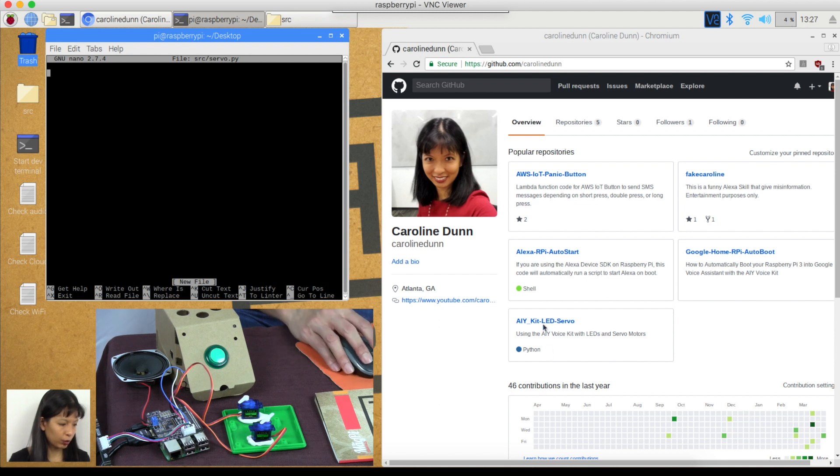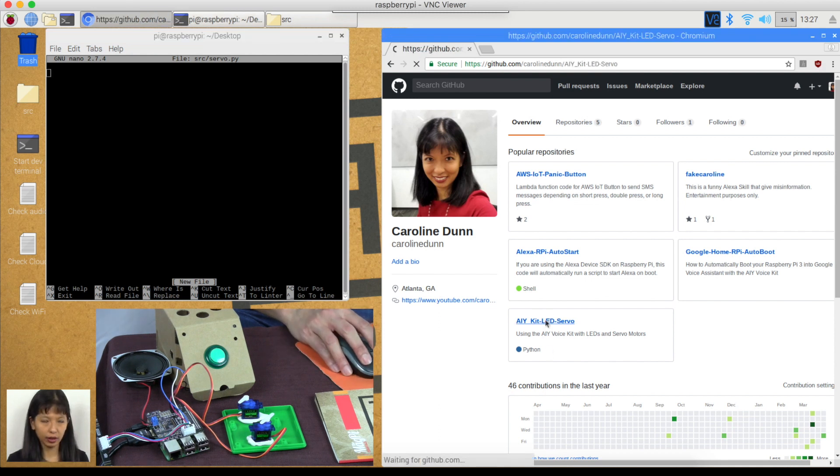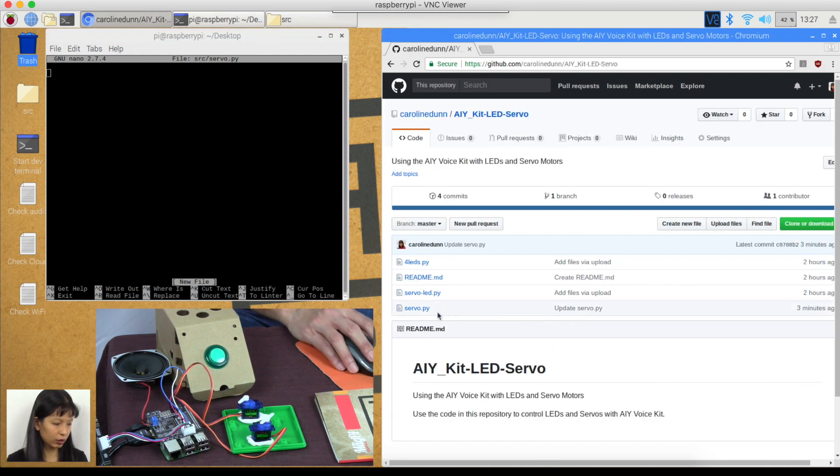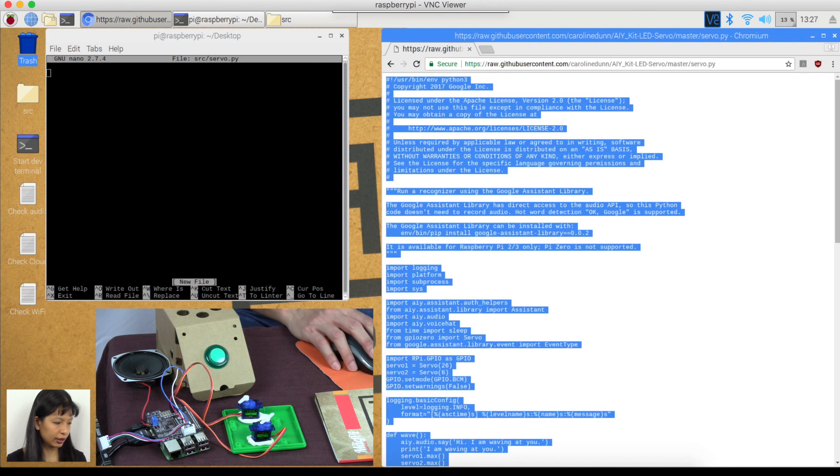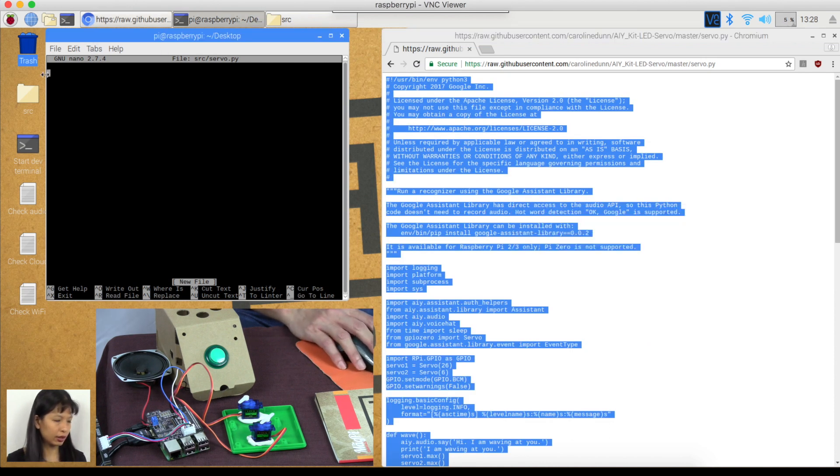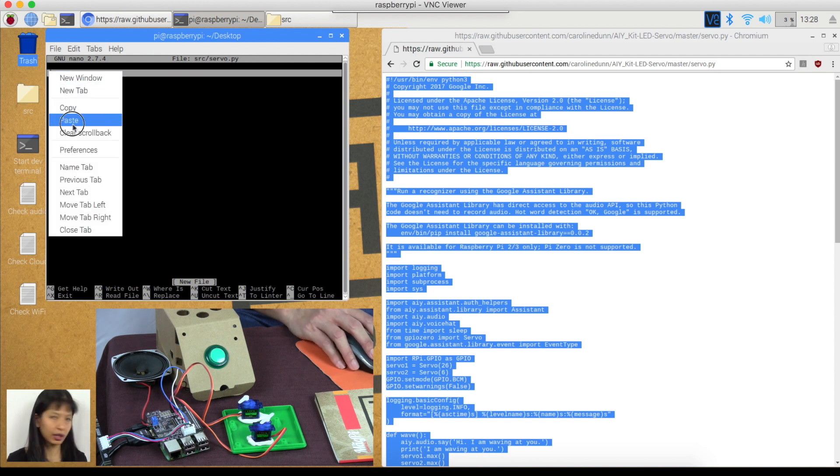And we are on my GitHub page. We're going to go into the LED servo page. We're going to go to servo.py. This is Python. Go to raw. We're going to control A to get everything. Copy. And then go over into the text editor and hit paste.